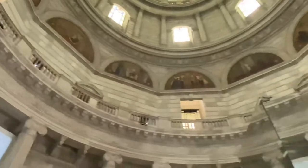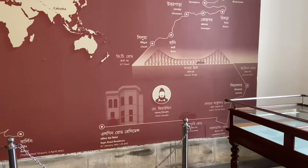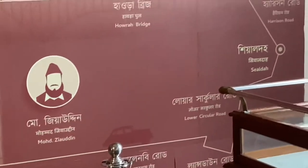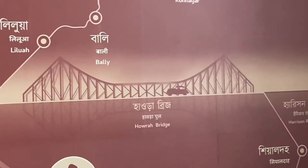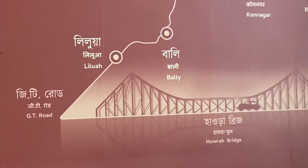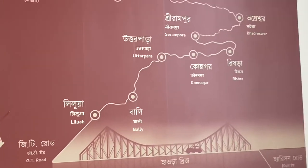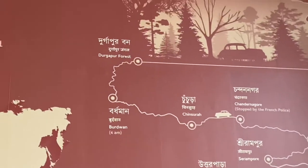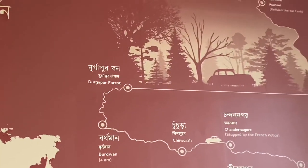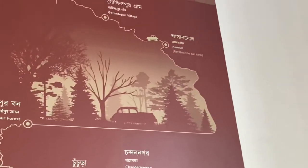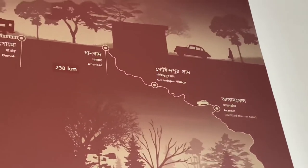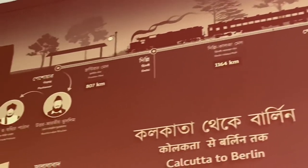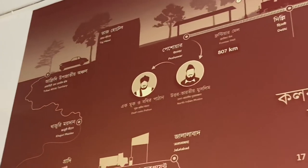There is a map that shows India and Berlin. It is a distance and location map. It is a road map showing where Berlin is located.